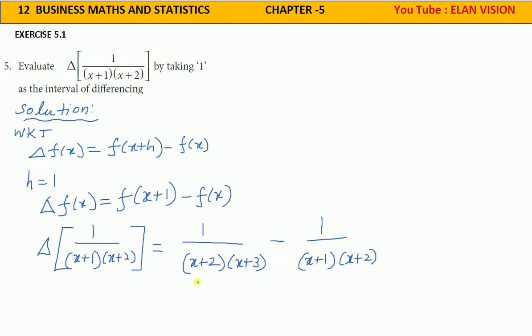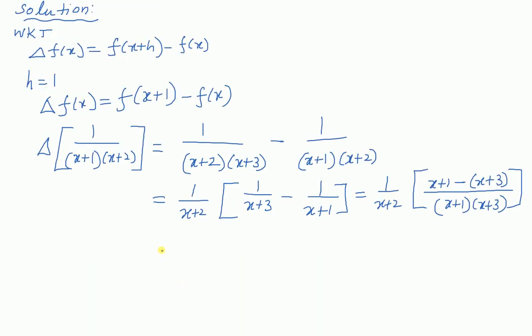This becomes 1 divided by x plus 2 into x plus 3, and f of x as usual. Next step: taking LCM, the common denominator is x plus 1 into x plus 2 into x plus 3.